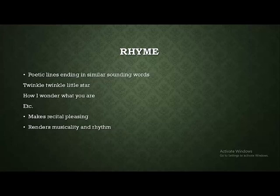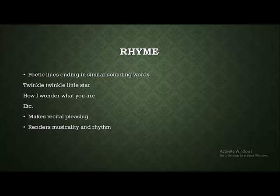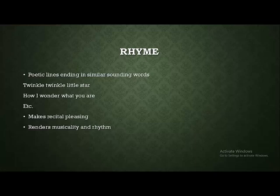Rhyme is a very easy element to identify in a poem. It occurs when poetic lines end in similar-sounding words. For example, in the childhood poem 'Twinkle Twinkle Little Star, How I Wonder What You Are' — 'star' and 'are' are similar-sounding words at the end of lines. The function of rhyme is to make the recital or reading of a poem pleasing, and it also gives musicality and rhythm to poetry.